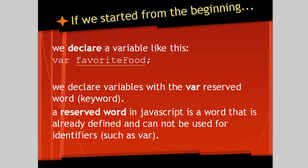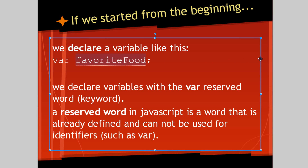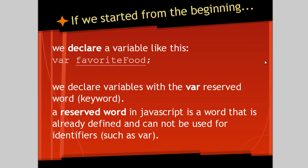So if we start from the beginning, we declare a variable like this. We declare it with the var reserved word, or keyword. A reserved word in JavaScript is a word that is already defined and cannot be used for identifiers, such as var. Basically, this is a word recognized by JavaScript — when JavaScript runs into this, it knows you are trying to declare a variable. So it wouldn't make sense to use a reserved word for your variable name or your identifier. There are other reserved words, and you can find a list of all of them online.